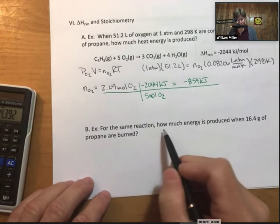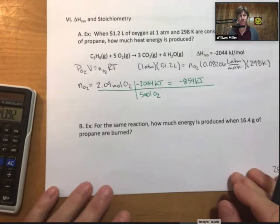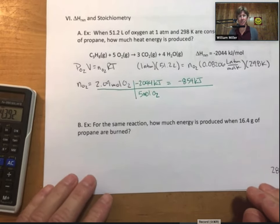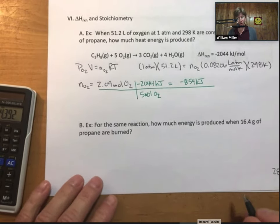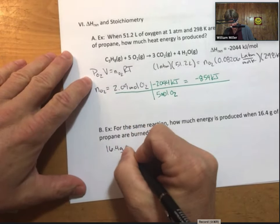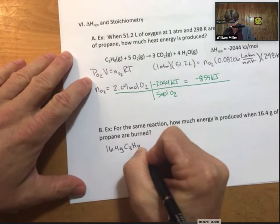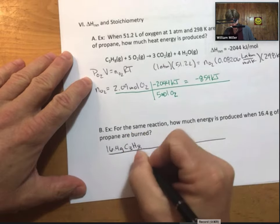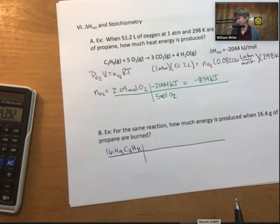That's just energy, that's an amount of heat energy like a Q. The negative part tells you that it's produced. Now, for the same reaction, how much energy is produced when 16.4 grams of propane are burned? For this one, we'll start with grams of propane.